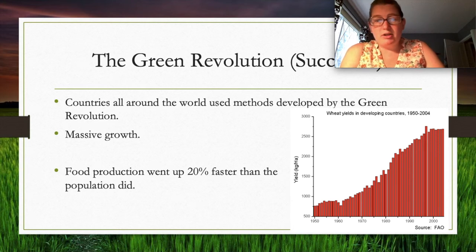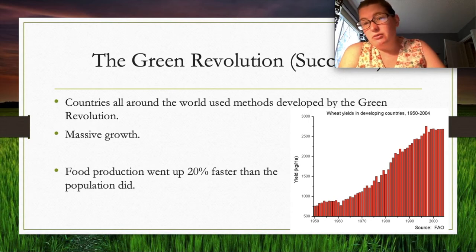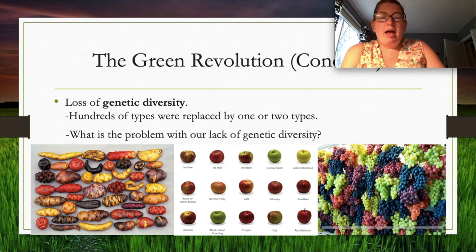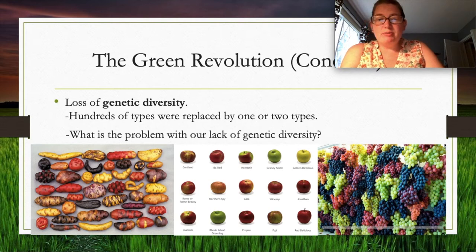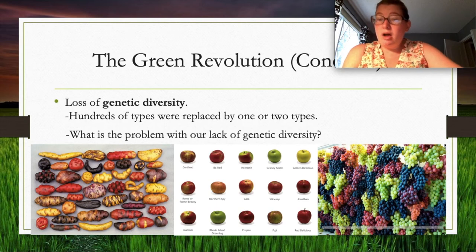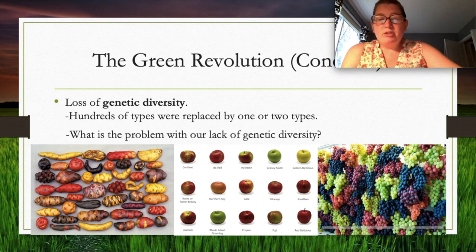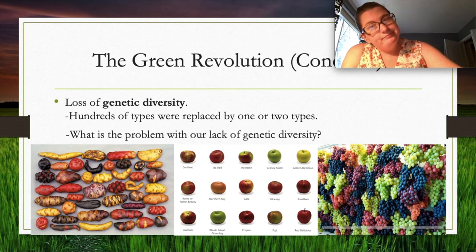The Green Revolution led to higher yields, more food, and less starvation — food production grew 20% faster than the population, which was fantastic. However, this came at a cost: hundreds of varieties of crops were replaced by just one or two high-performing types, causing a significant loss of genetic diversity. This raises the question of why that loss of diversity matters.